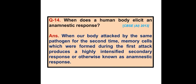When does a human body elicit an anamnestic response? When our body is attacked by the same pathogen for the second time, memory cells which were formed during the first attack produce a highly intensified secondary response, otherwise known as an anamnestic response.